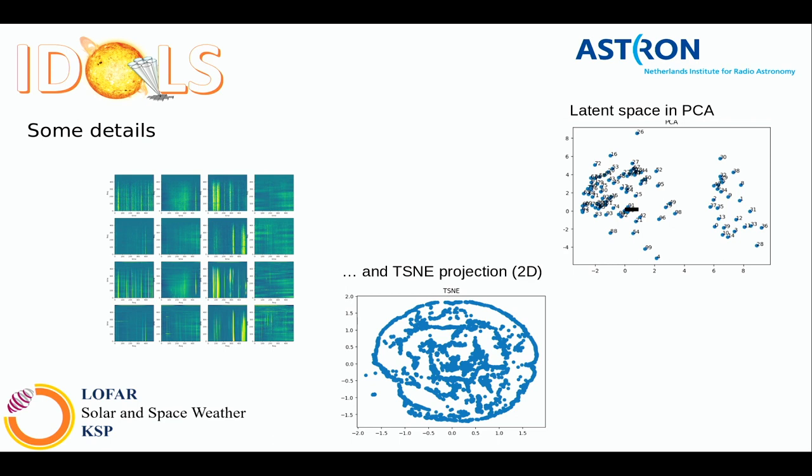Looking at the latent space with PCA projected to two components, many of the points cluster around zero, suggesting the VAE struggles to differentiate and reconstruct images meaningfully. We also see a similar pattern in a t-SNE projection, though it's less evident. This led us to try a supervised learning approach.